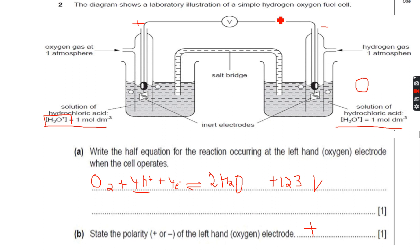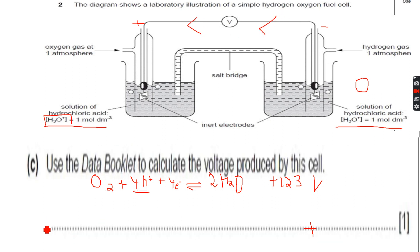Now use the data booklet to calculate the voltage produced by this cell. This is the lower one, so we will invert the equation and then add. Even after inverting, zero remains zero, so 1.23 plus zero will be 1.23.